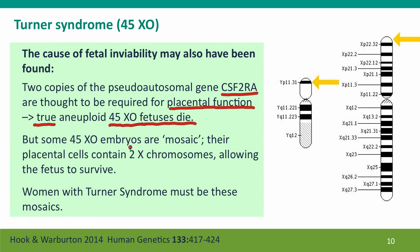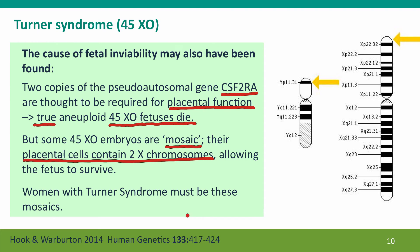Some embryos are mosaic — their cells contain normal karyotypes with two X chromosomes. The hypothesis is that if the placental cells are mosaic (which is very common, as placental cells often have a somewhat different genotype than the embryo for aneuploidies), the placenta will be able to function normally and allow the fetus to survive. We'd therefore expect women with Turner's syndrome to also be a little bit mosaic, though this can be hard to detect unless a very careful search is made of all different tissues.